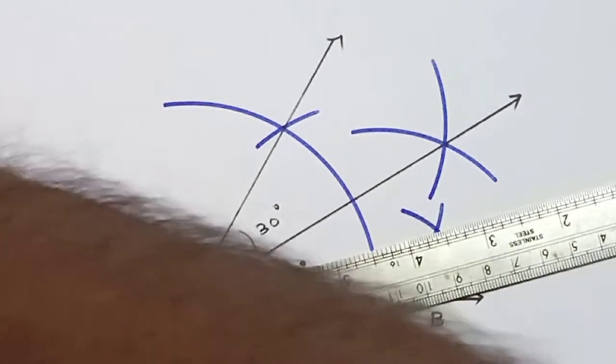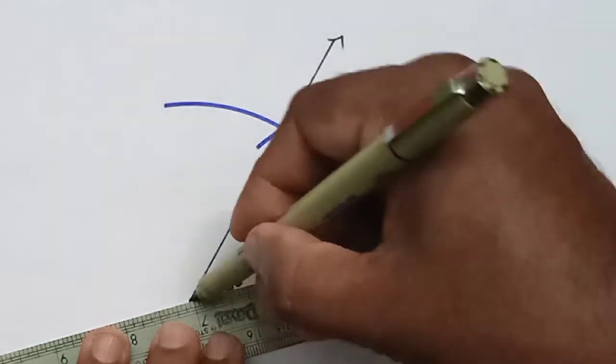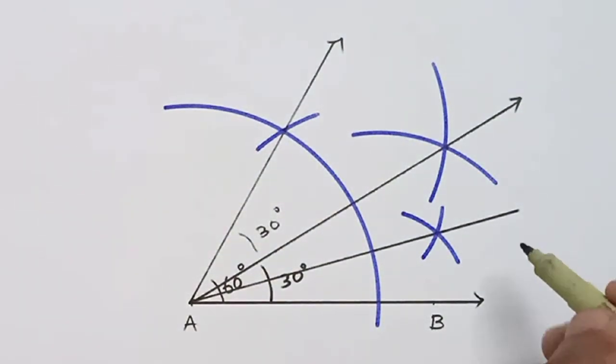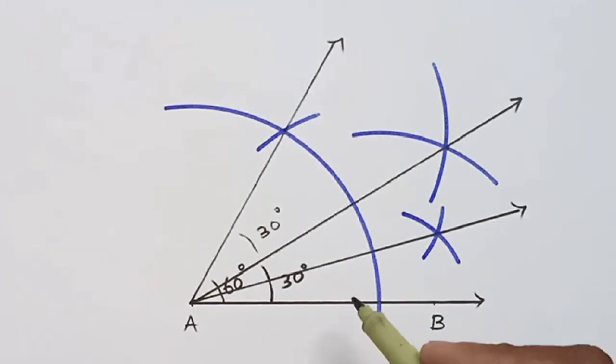Join these intersecting points. So this angle will be 15 degree.